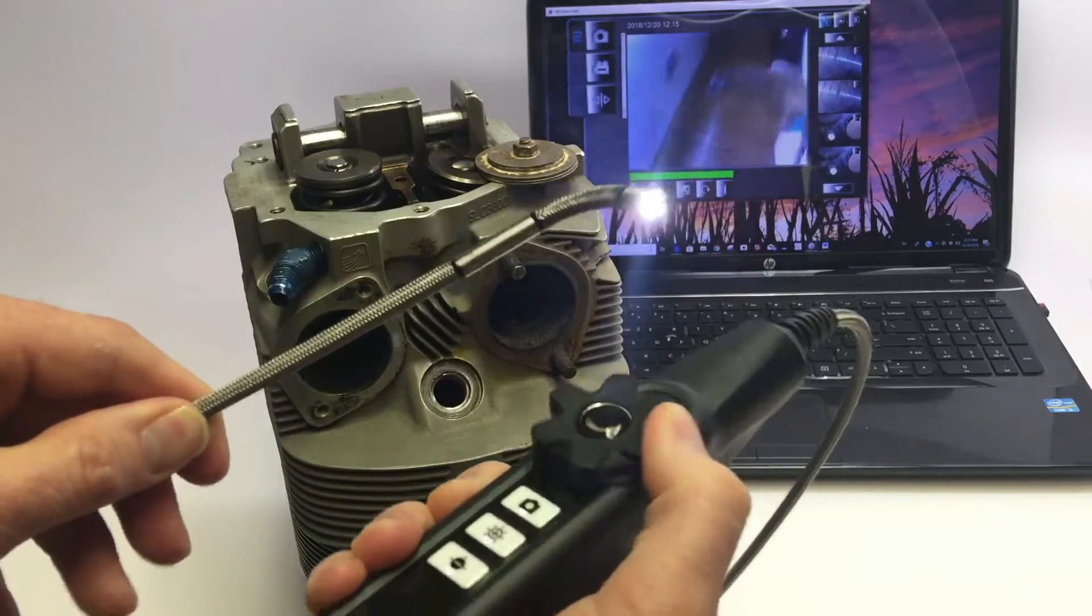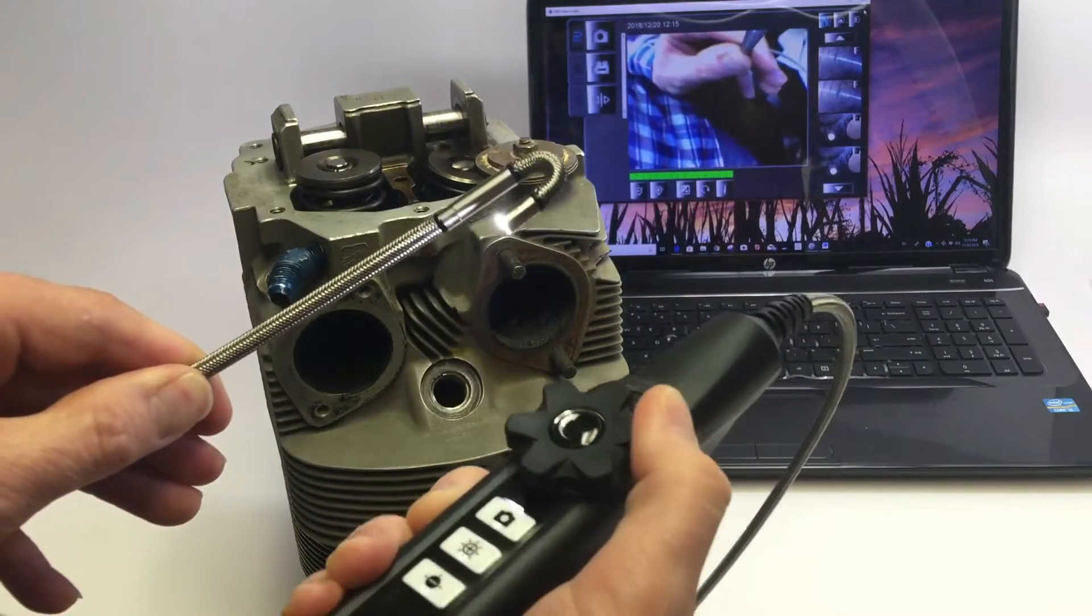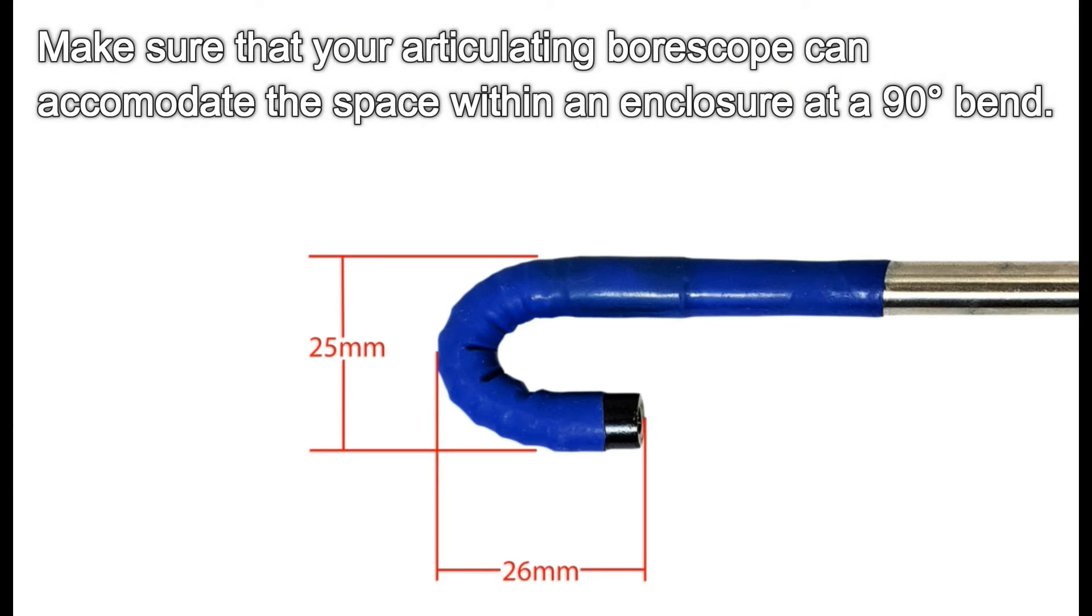One thing that must be considered when purchasing an articulating boroscope is that you have enough room within your enclosure to accommodate the bend.